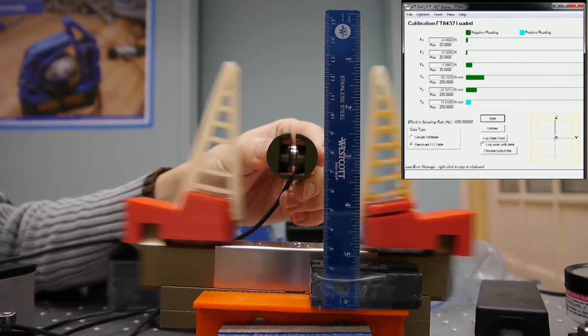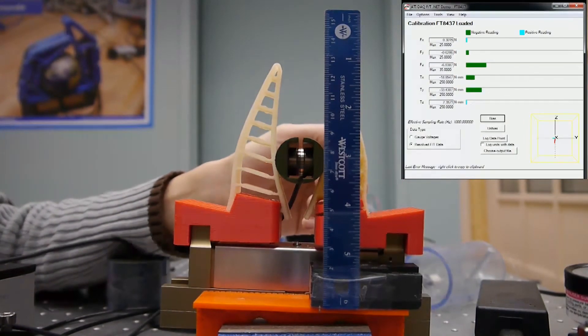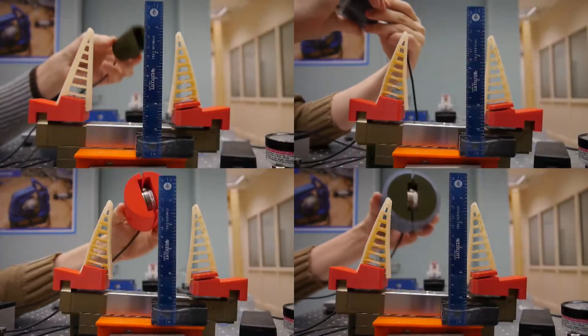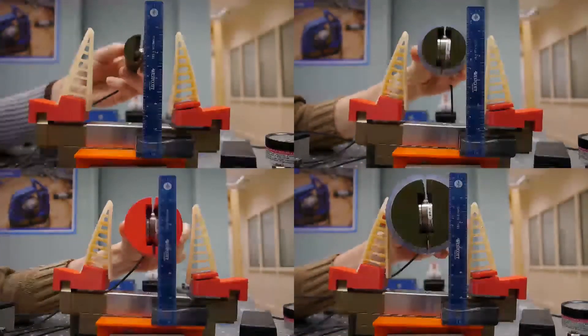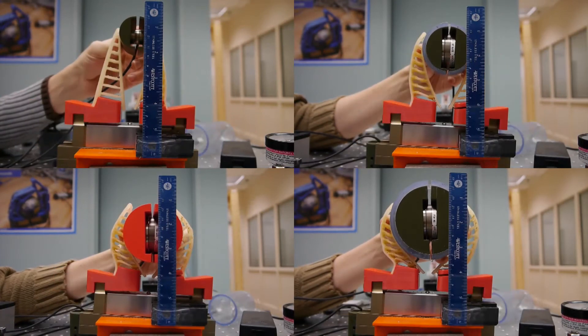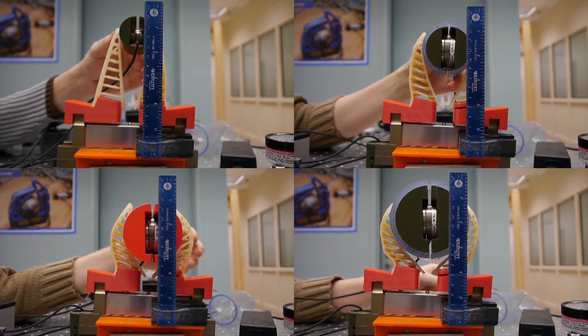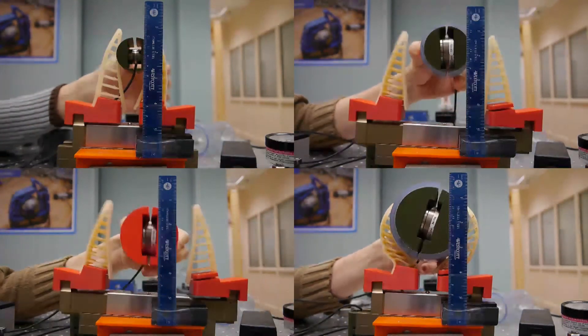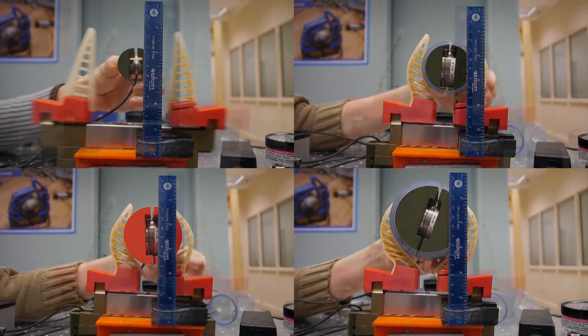We also verified these forces experimentally using several grasp artifacts with a six-axis force sensor embedded inside them. Using this method, we were able to find the stiffness parameters, allowing us to match the simulation and experimental results to an excellent degree.